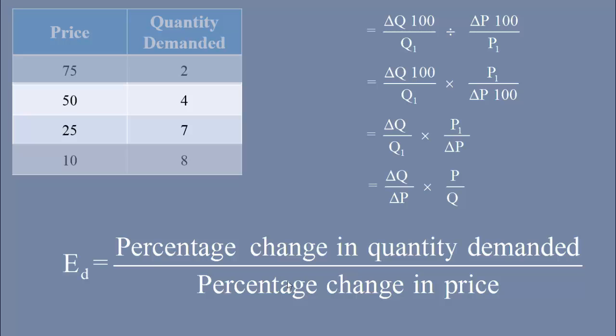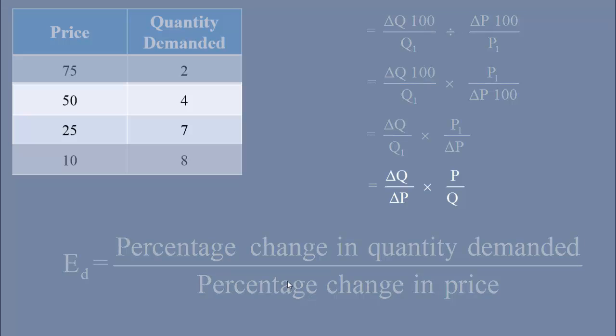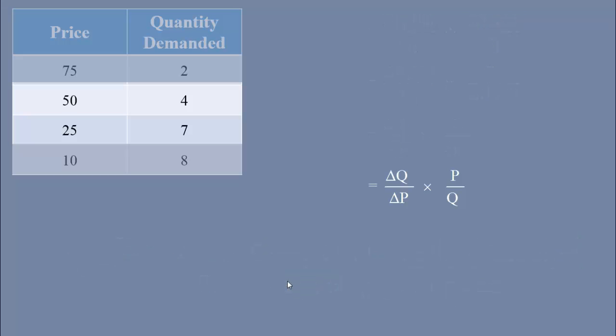Having obtained the formula, we shall try to find the elasticity. Delta Q is equal to Q1 minus Q2, that is initial quantity minus new quantity. It should be noted that the order of finding the change should not be changed.